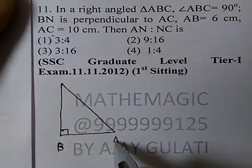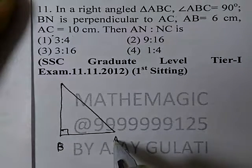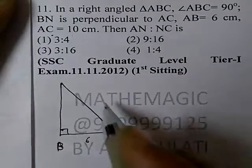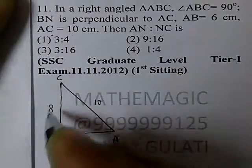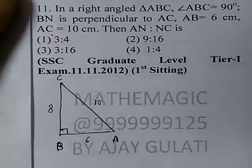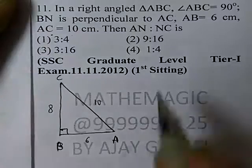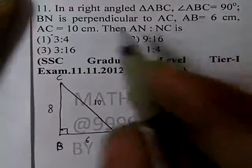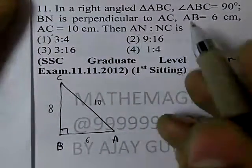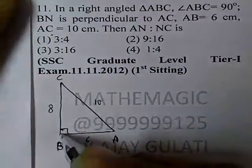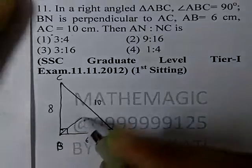Let's set up the triangle: AB is equal to 6, AC is equal to 10, so BC is equal to 8. Then AN is to NC — BN is the perpendicular dropped here onto AC.